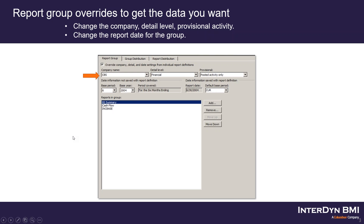What report groups allow you to do is to essentially run all of those reports at the same time. You can change the company that you're running the report for, the detail level, the provisional level, and you can also choose the report date. So even if you had to go back to a historical version and run December reports, you could choose December as your report date and run all those reports for December.